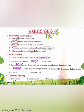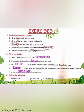Part 5 — A sea is blank than an ocean. The answer is smaller; a sea is smaller than an ocean.